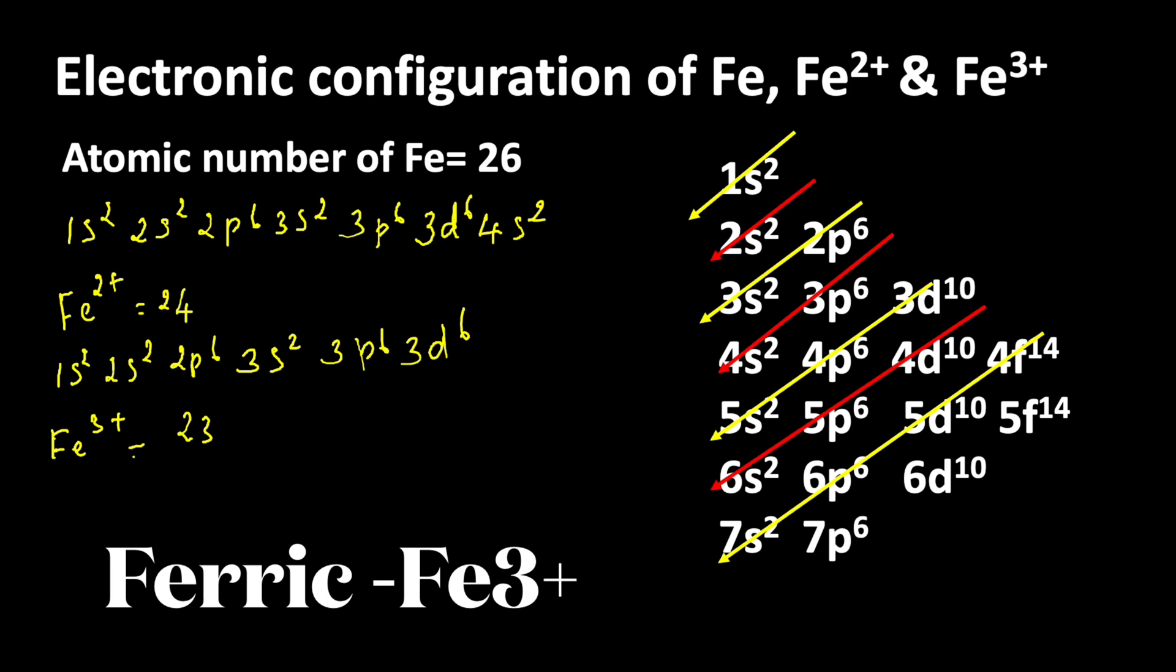So we can write the electronic configuration: 1s2 2s2 2p6 3s2 3p6. If you look at that, 2 electrons from 4s orbital and 1 electron from 3d orbital need to be removed from the ion.